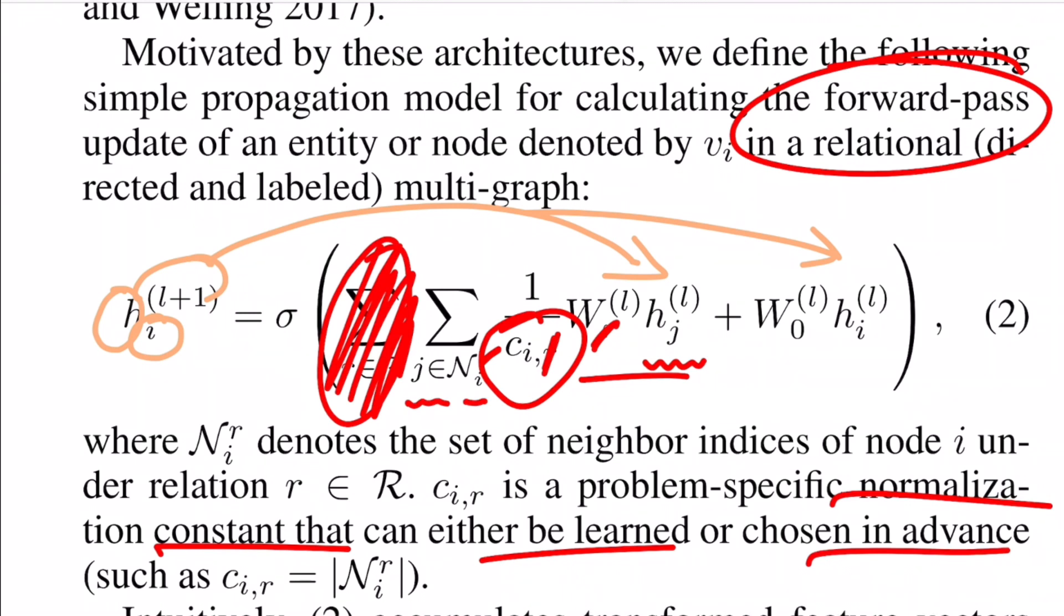So this 1 by c_i,r is nothing but the normalization constant that they have also written which can be learned or chosen in advance, which is nothing but the degree of the node I. So once you have done aggregation and summing up the results from all the neighboring nodes, you add the information from this node itself from the previous layer what it had. Do a separate transformation for this.